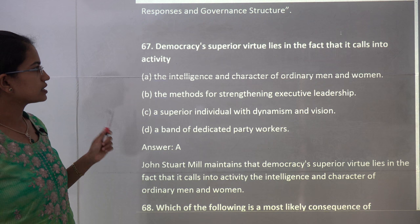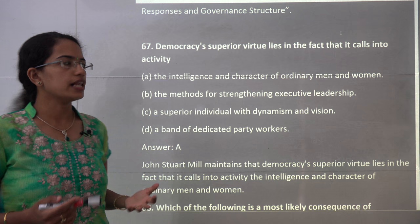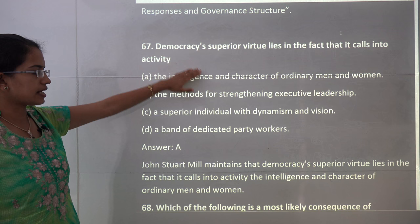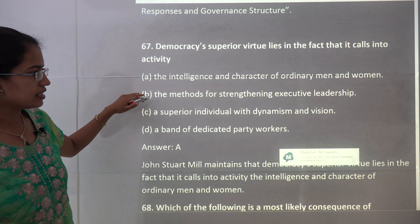The next question is about democracy as a superior virtue. This concept was propounded by Mill, who said the superior virtue of democracy lies in the intelligence and character of ordinary men and women. So A is the correct answer.